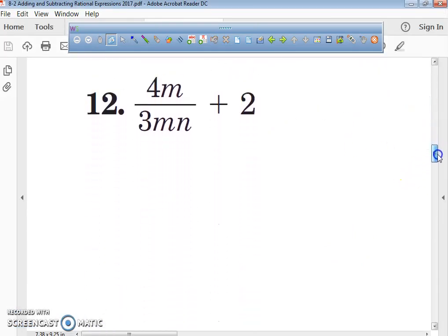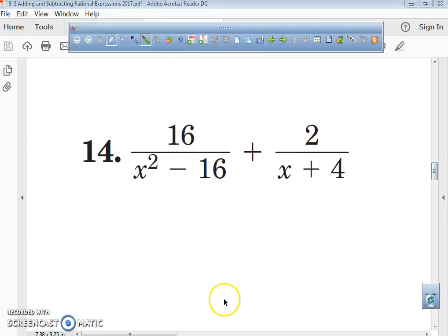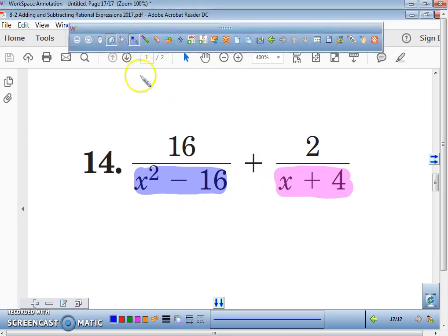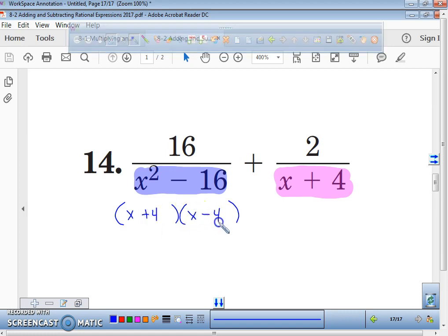We're going to go down to problem number 14. We're going to highlight this denominator, which is X squared minus 16. We're going to highlight this denominator, which is X plus 4. Hopefully, you can see how these are definitely not the same. This denominator is what's called a difference of squares, and it factors to X plus 4 times X minus 4. The least common multiple is just X plus 4 and X minus 4.